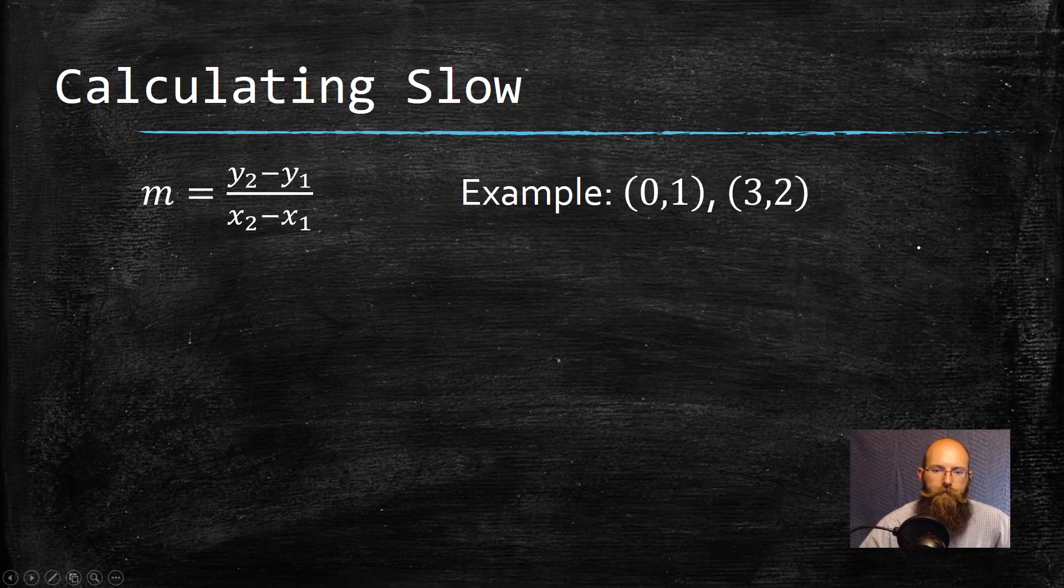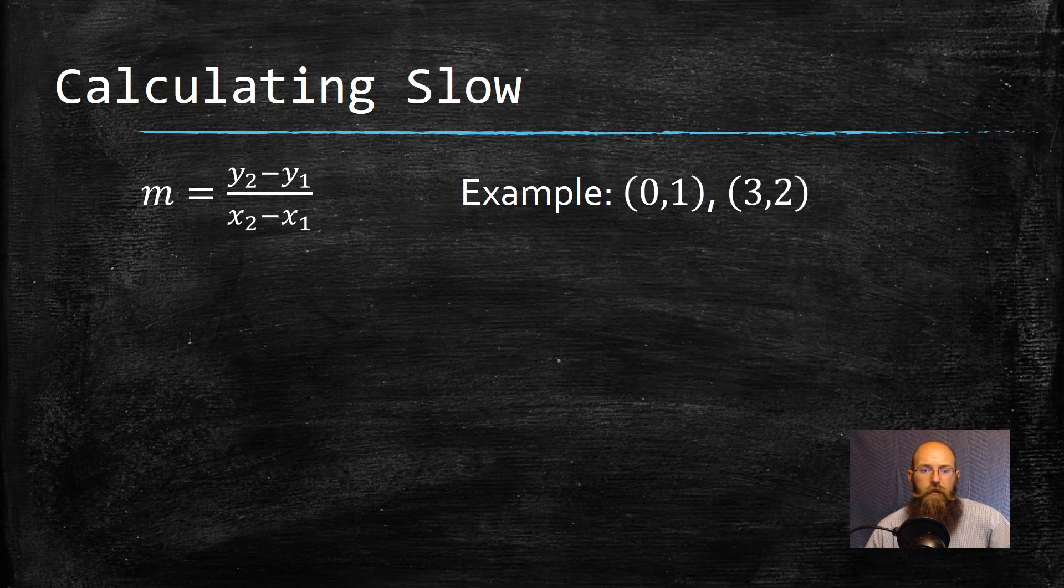Let's check out our next example. Now I actually have to calculate slope. Our slope is often labeled by an M. And I have my change in Ys, which is my y2 minus y1 over x2 minus x1.